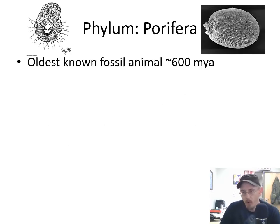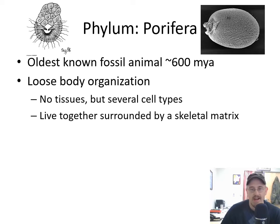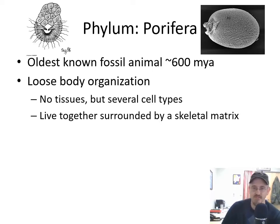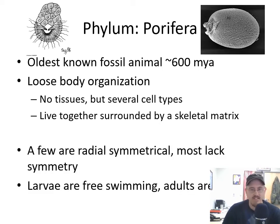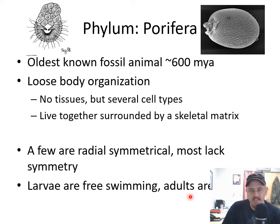The oldest known clade is Phylum Porifera, known from over 600 million years ago — perhaps older. It has a loose body organization with no real true tissues, meaning it has lots of cell types but they're not organized into tissues. They live together in a skeletal matrix secreted by the cells. These are filter feeders. Most have no body symmetry; a few are a little bit radial. Larvae are free swimming, but adults are sessile — meaning they're stuck in place.